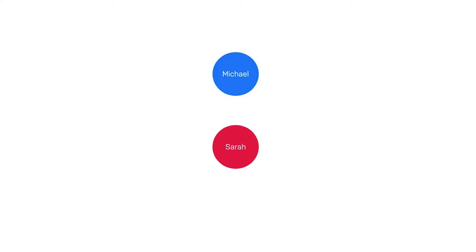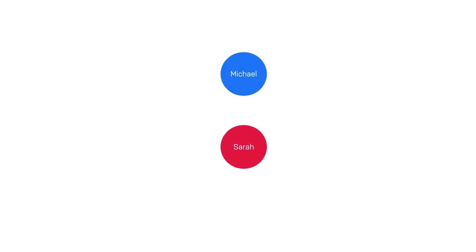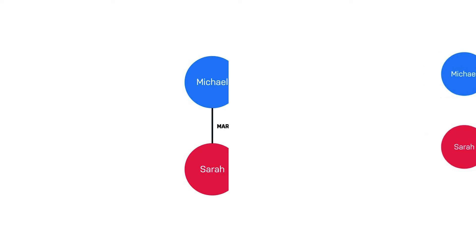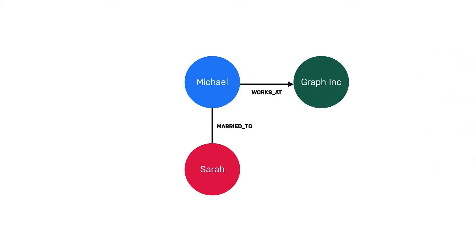On their own, these elements are uninspiring, but when we start to connect these circles together, things start to get interesting. Relationships, or edges, are used to connect nodes. We can use relationships to describe how nodes are connected to each other. For example, Michael has the works-at relationship to Graph Inc. because he works there, and Michael has the married-to relationship to Sarah because he is married to her.